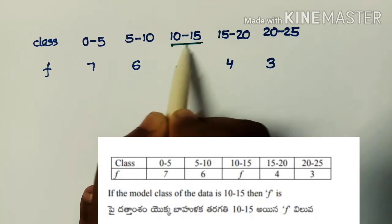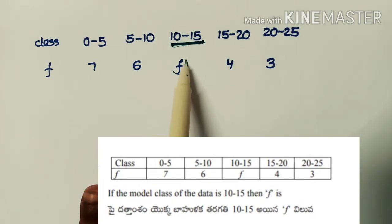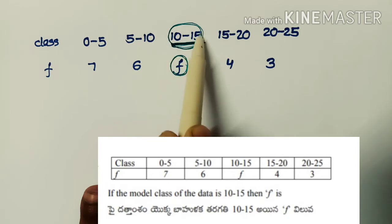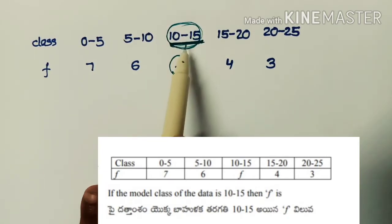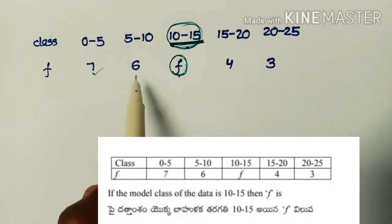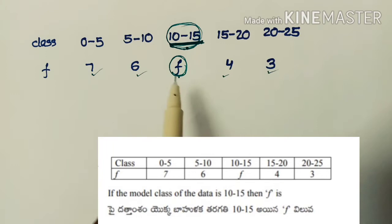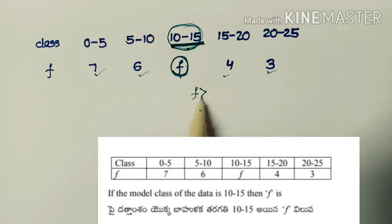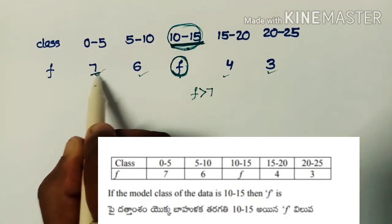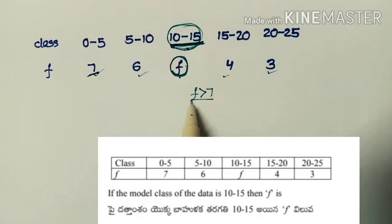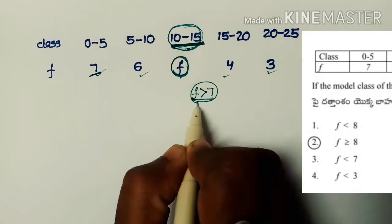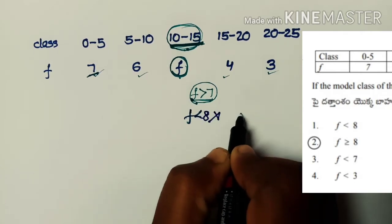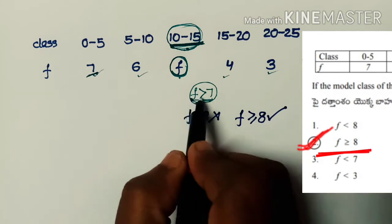Given that the modal class is 10 to 15, what is the meaning of modal class? The class having the highest frequency is called the modal class. The frequencies given are 7, 6, 4, 3. We want f to be greater than all these values — greater than 7. So the condition is f greater than 7.